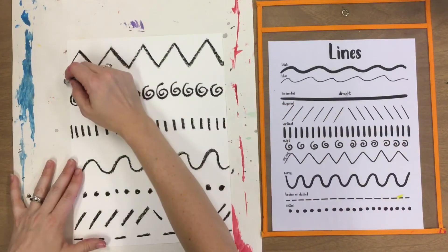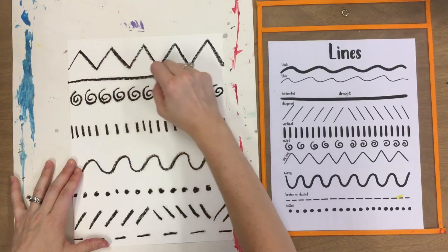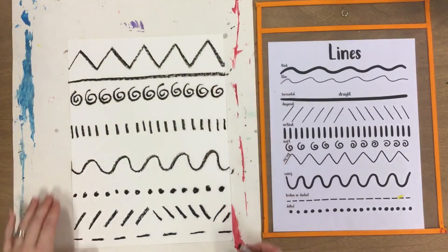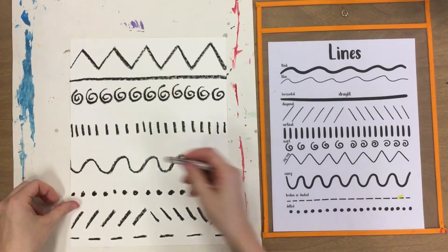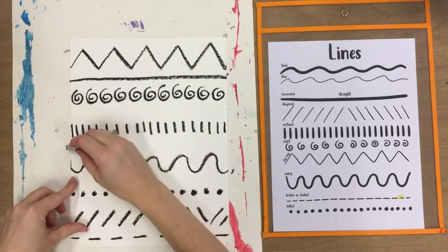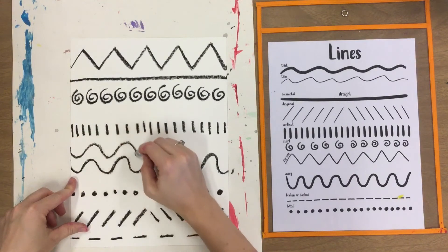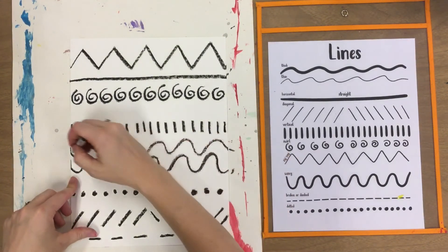I still need to make a horizontal line too. So if you feel like you still have some room, if you wanted to add in another line, maybe I could make another wavy line. Maybe I'll make one wavy line a little bit thicker.